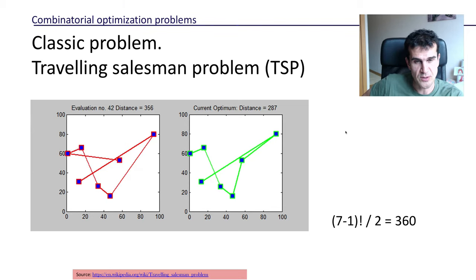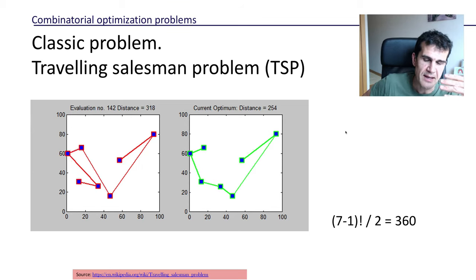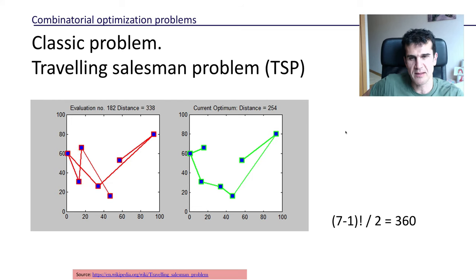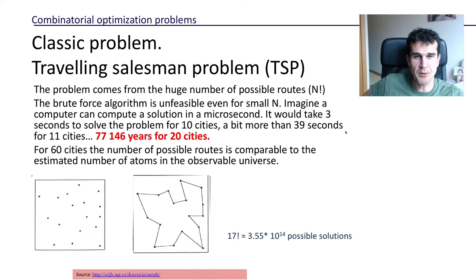But it scales as the factorial, and the problem is that factorial scales really badly. I mean, you really have to do the numbers to realize how badly it scales, and we're going to do that here. So imagine, for instance, that we can compute how long a certain route is in one microsecond—a millionth of a second—so we can compute a million lengths in one second.